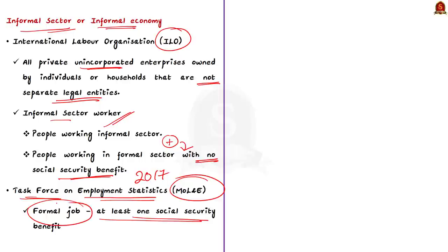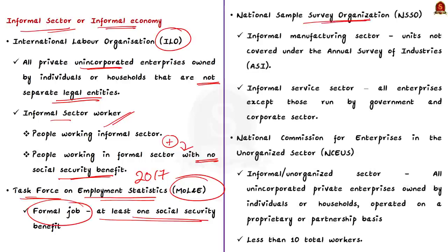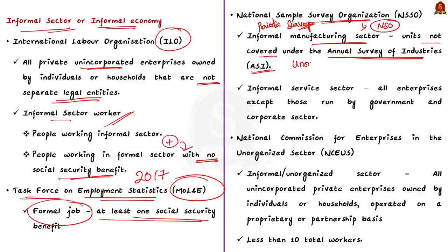Informal sector workers are a broader concept — it not just includes people working in the informal sector, but also the people working in the formal sector who are not covered by the social security benefits. The National Sample Survey Organization, now a part of the National Statistical Office, define the informal sector as follows: in the case of the manufacturing sector, enterprises not covered under the Annual Survey of Industries are included as part of the unorganized informal sector. In the case of the service sector, all enterprises except those run by the government — central, state or local body — and the corporate sector were regarded as the unorganized informal sector.